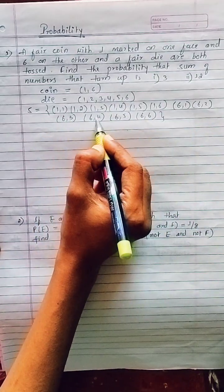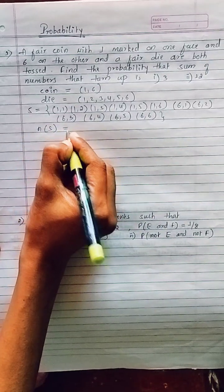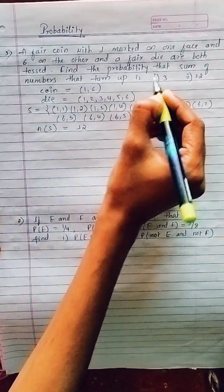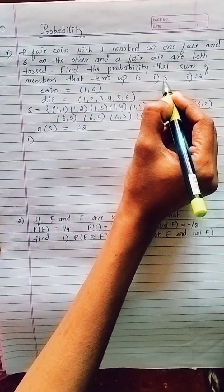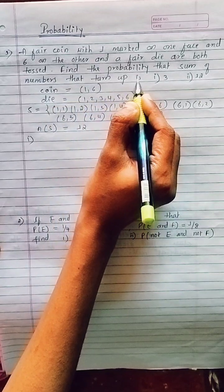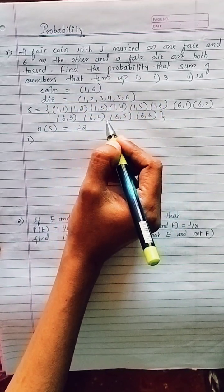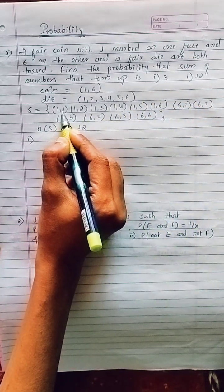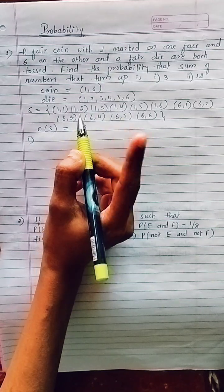The sample space contains twelve total elements — the number of elements in the sample space is 12. The first sub-question asks: find the probability that the sum of the numbers is three. When we add the pairs, 1+1=2, and 1+2=3, so the pair (1,2) gives us a sum of three.